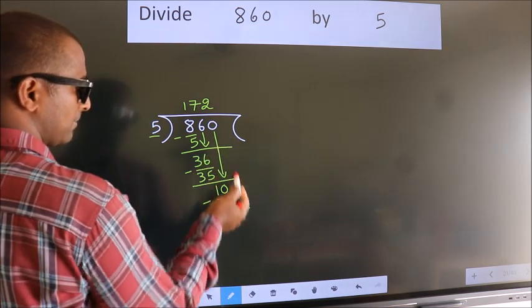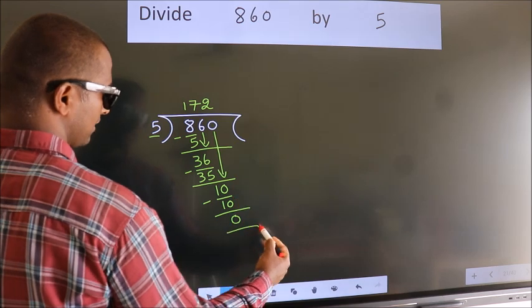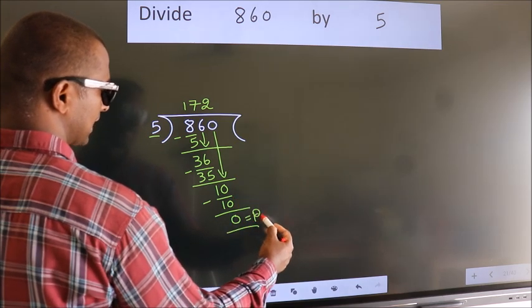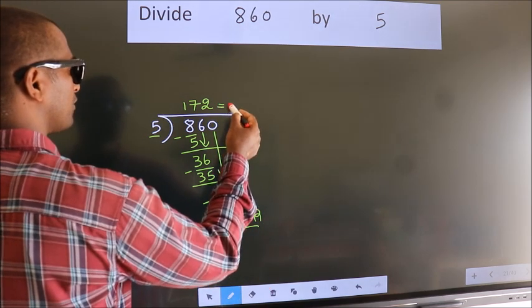No more numbers to bring it down. So, we stop here. This is our remainder. This is our quotient.